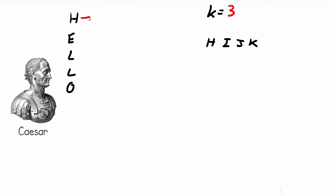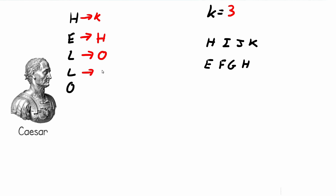So h becomes the letter k. The letter e, if we shift it to the right by three letters, goes e, f, g, h — so e becomes h. The letter l, if we shift it forward by three characters, becomes o. The second l also becomes o, and the letter o becomes the letter r.